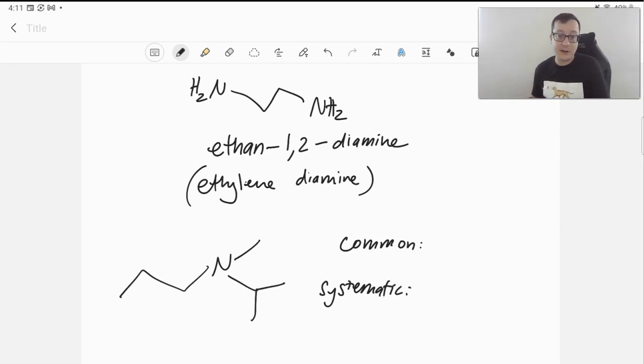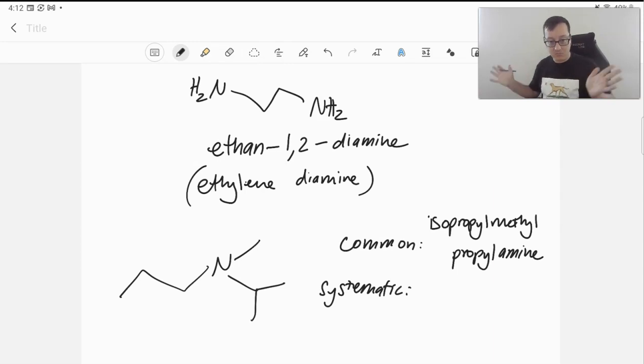Either one would be fine for a simple amine like this. The common name would be to list all of these substituents on your nitrogen in alphabetical order. So, we have an isopropyl group, a propyl group, and a methyl group. So, we would say isopropyl methyl propylamine. Or something like triethylamine - three ethyl groups on the amine. So, you just named them all in alphabetical order. No problem.